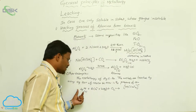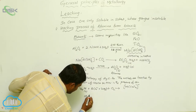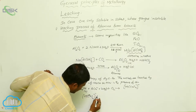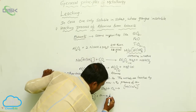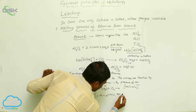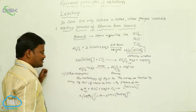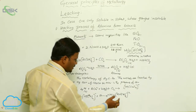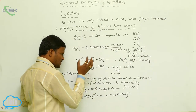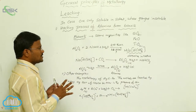A cyanide complex [M(CN)₂]⁻ is formed by reacting with metals like silver and gold. When this formed metal complex reacts with zinc, it produces the pure metal, plus a complex called zinc cyanide — tetra-cyano zincate(2-) — as the resulting compound. This means the impurities present with silver and gold are eliminated using this leaching process.